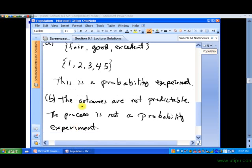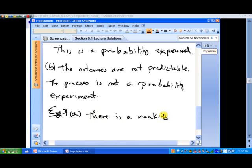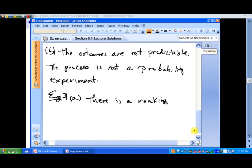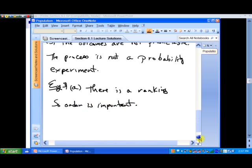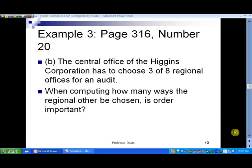in example three, part A, there is a ranking. That would be the president, the vice president, the treasurer, and so on. So, order is important. All right. So, that's part A.